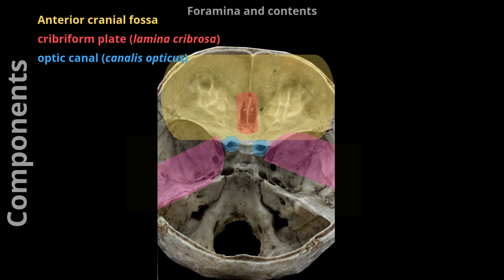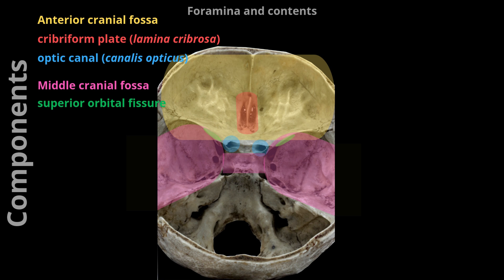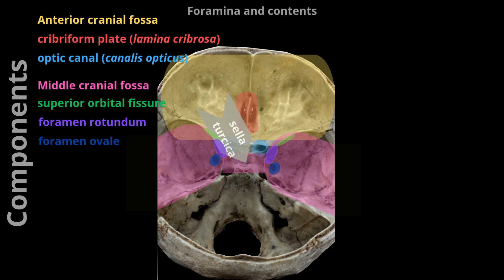Middle cranial fossa: The middle cranial fossa lies slightly deeper than the anterior cranial fossa. The superior orbital fissure, bounded by the greater and lesser wings of the sphenoid bone, contains the trochlear nerve, abducens nerve, oculomotor nerve, and ophthalmic nerve. The sella turcica is a depression in the sphenoid bone; in the center of the middle cranial fossa it forms the pituitary fossa in which the pituitary gland sits. Further important foramina are the foramen rotundum (maxillary nerve), foramen ovale (mandibular nerve), and the carotid canal (internal carotid artery).